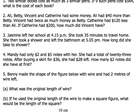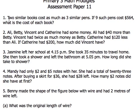It says two similar books cost as much as three similar pens. If nine such pens cost $564, what is the cost of each book? Two similar books, similar means the same. Two similar books cost as much as three similar pens. What does it mean when they say as much as? It means equal.